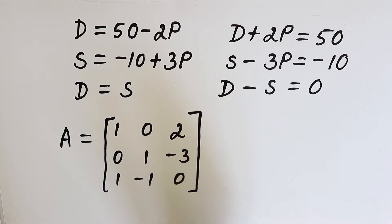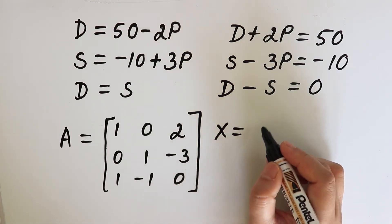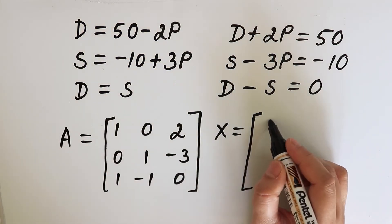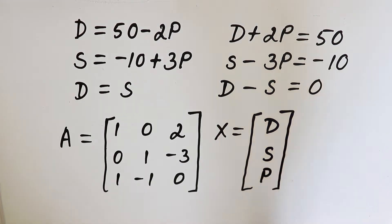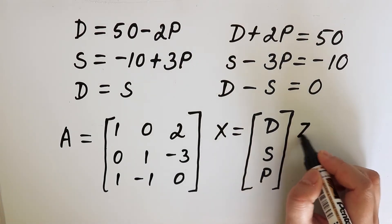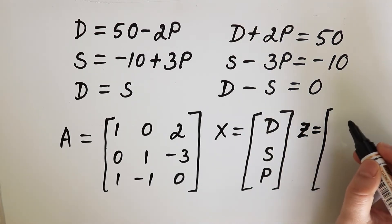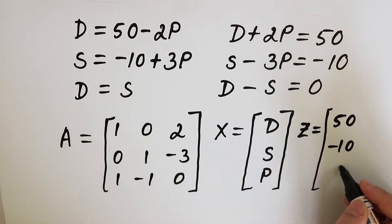Next, we construct a column vector of the variables and let us name it X. So, X is equal to the variables D, S, and P. And a column vector of constants, let us name it Z. So, Z is equal to 50, minus 10, and 0.